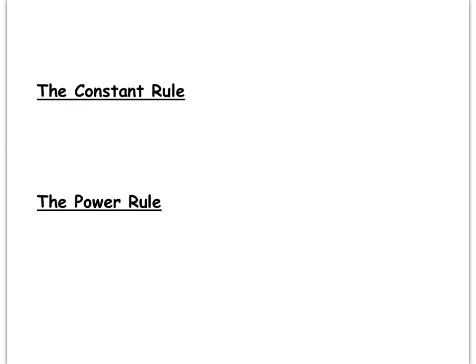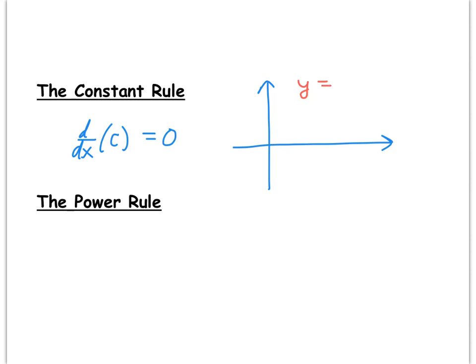Our first shortcut is called the constant rule. The constant rule says if we take the derivative with respect to x of a real number constant c, we just get zero. The explanation is fairly simple: if we drew the graph of y equals c, it's just a horizontal line with a height of c. Since a horizontal line has a slope of zero at every point, the derivative of y equals c should just be zero.